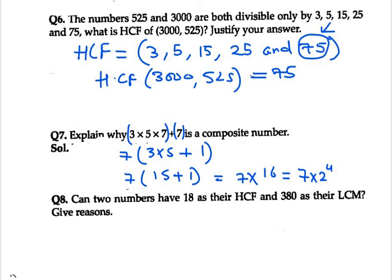Now moving on to question number 8, it says can two numbers have 18 as their HCF and 380 as their LCM? So it is given that HCF is 18 and LCM is 380. Now if it is given like this, then 18 must be a factor of 380.